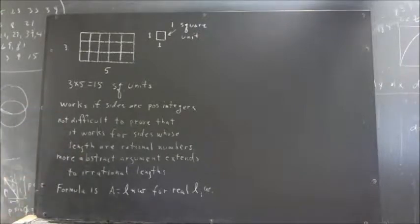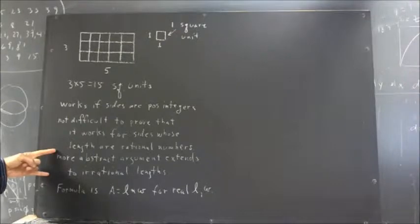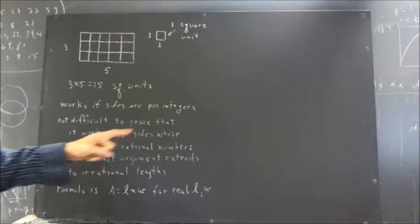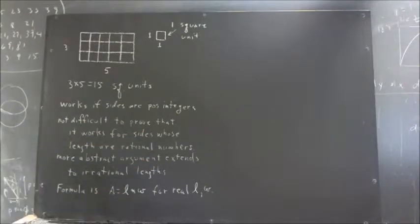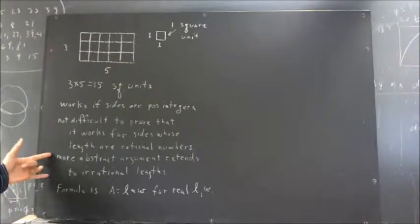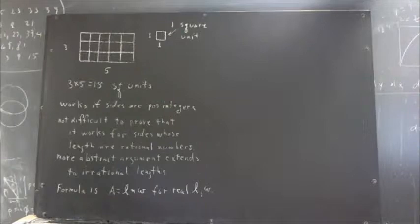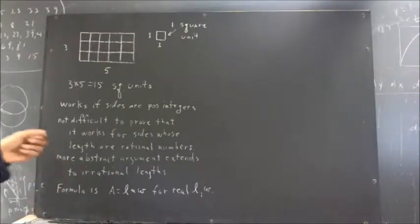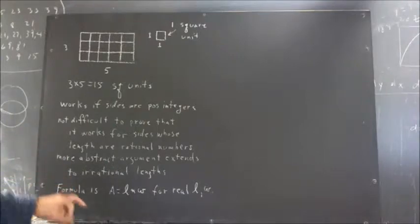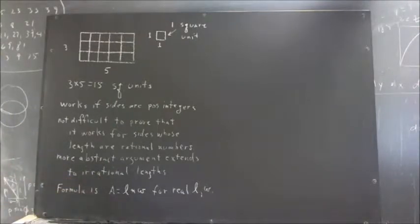Okay, now, well beyond the scope of what we can talk about here, but take my word for it, there are more abstract arguments that extend this to irrational lengths. And you have to use a fair amount of fairly abstract mathematics to actually do that in a rigorous manner. So we're not going to do that, although I will say that it comes about mainly because you can get a rational number that's arbitrarily close to any irrational number.